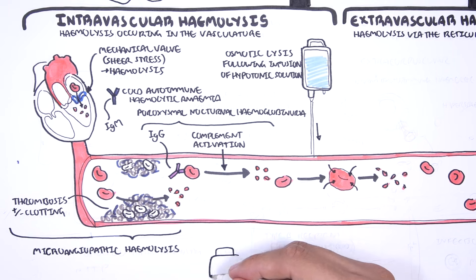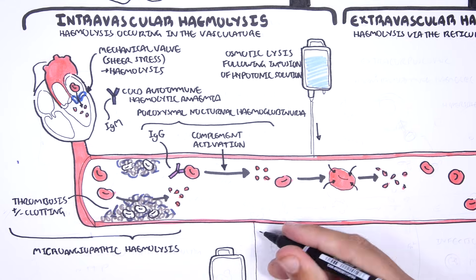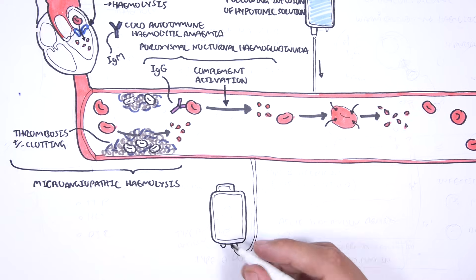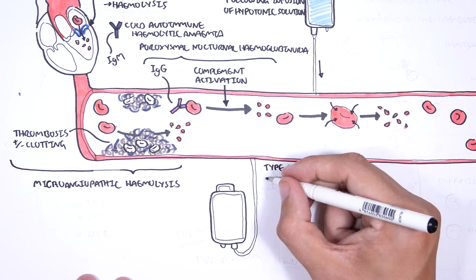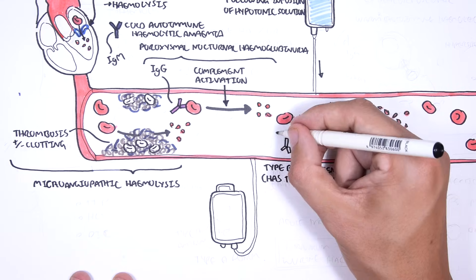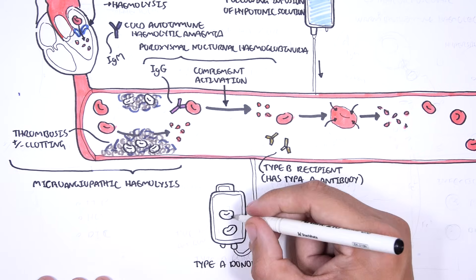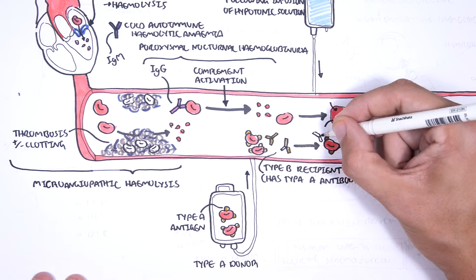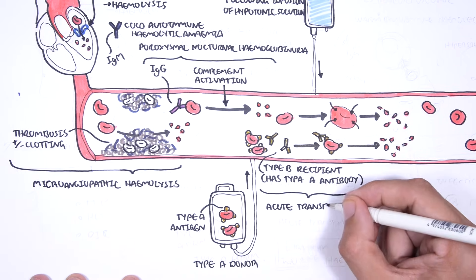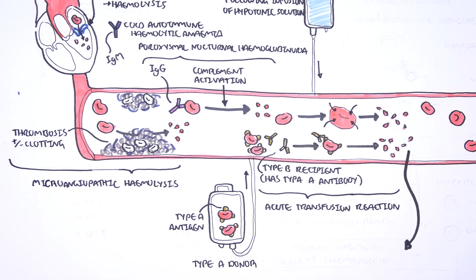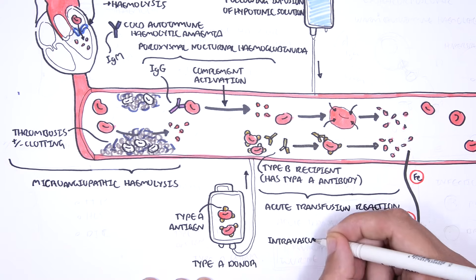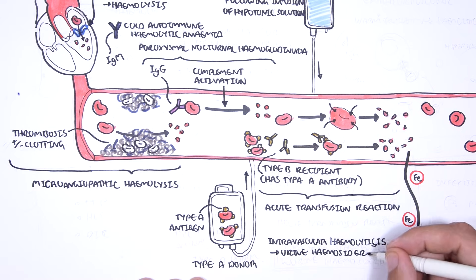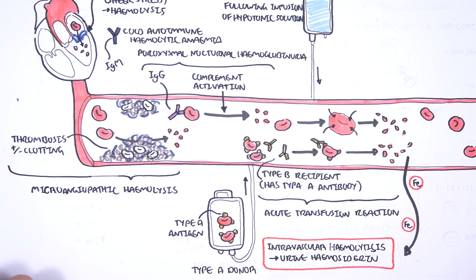Acute transfusion reactions are another important cause of hemolysis. Each person has red blood cells characterized by surface antigens — type A, B, AB, or O. If a type B recipient, who typically has type A antibodies, receives blood from a type A donor, those antibodies will attack the donor red blood cells, causing hemolysis due to incompatibility. In intravascular hemolysis, hemoglobinuria — dark brown urine due to iron from heme — is seen, typically three to four days after onset. This is not seen in extravascular hemolysis.